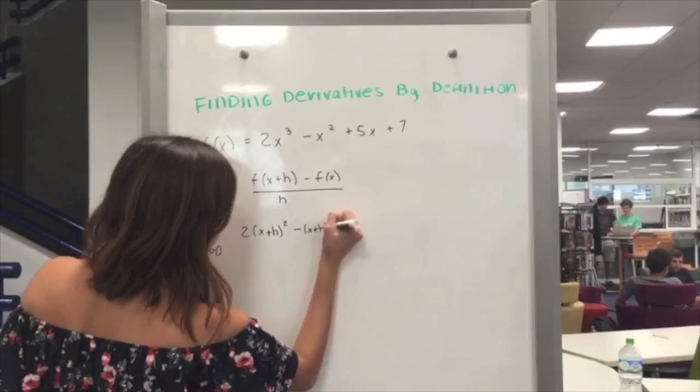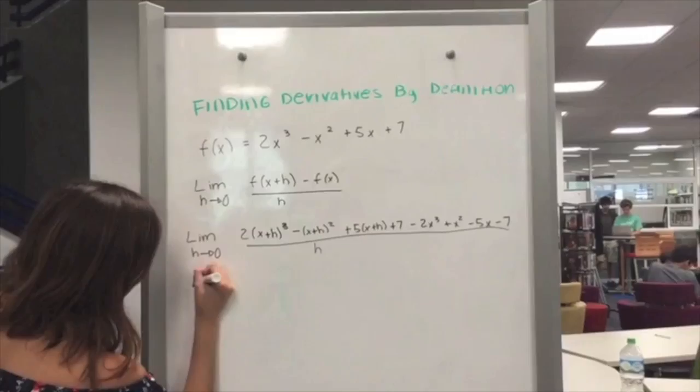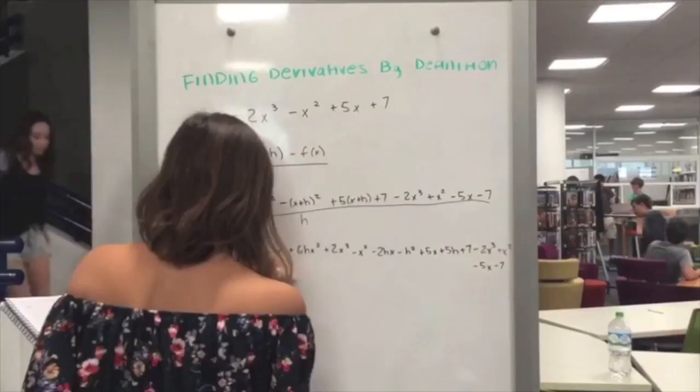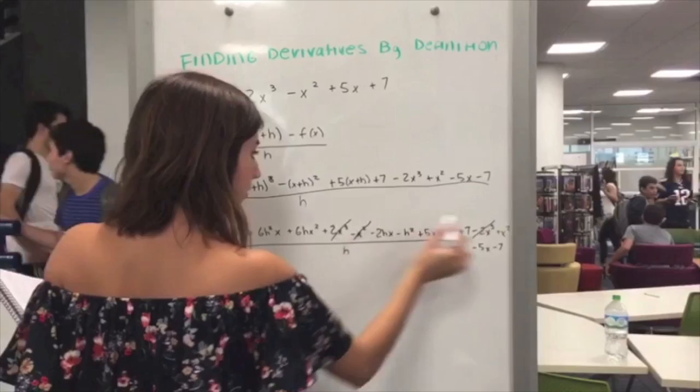Now simplify the equation. Eliminate anything that is possible. For example, in this equation that would be 2x cubed with negative 2x cubed, x squared with negative x squared, 5x with negative 5x, and finally 7 with negative 7.